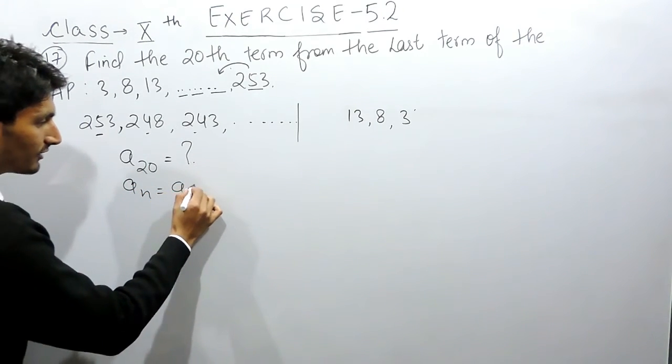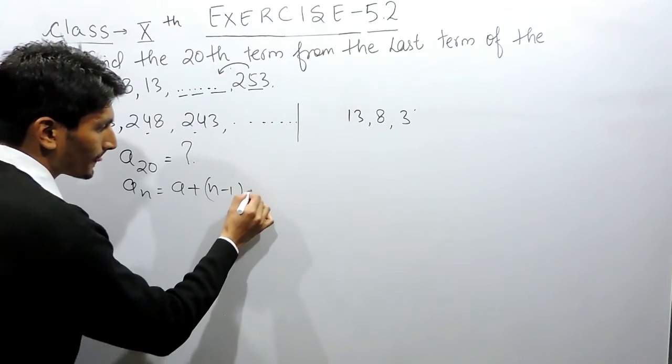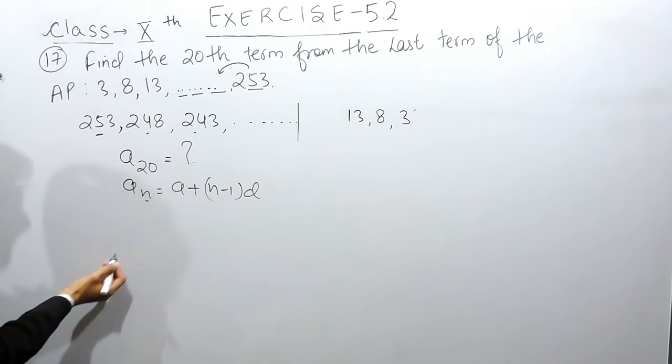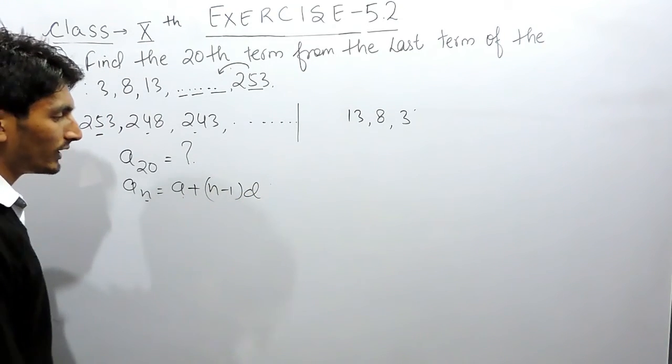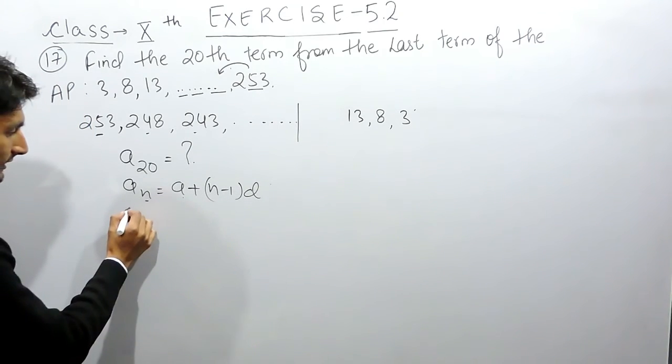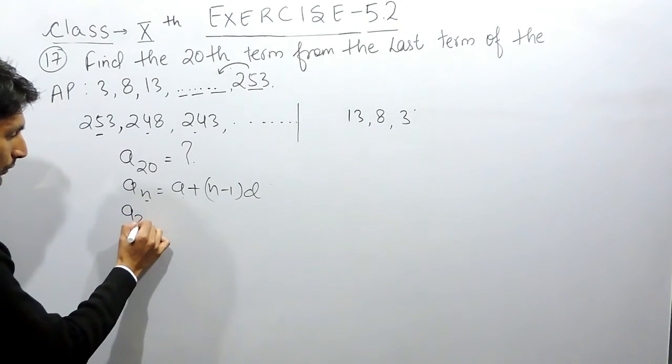We have a standard formula that if you want to find any term, that will be equal to a plus n minus 1 into d. In this case you have to find the 20th term.